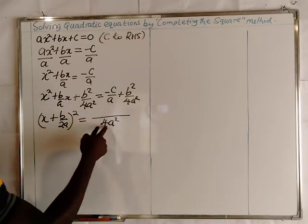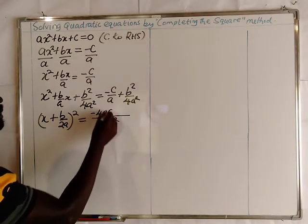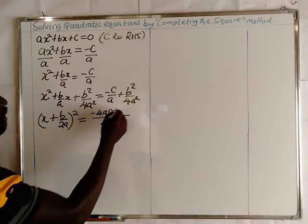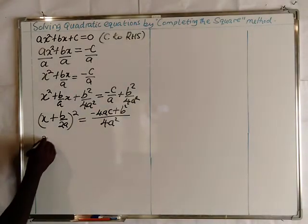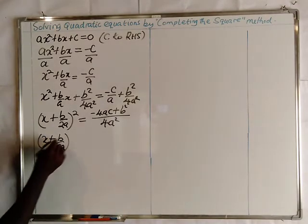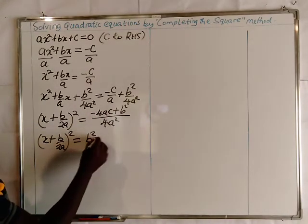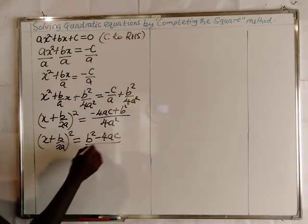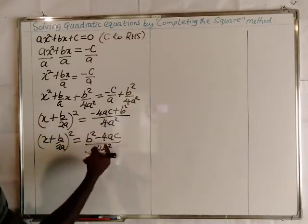On the right hand side, combining over the common denominator 4a squared, we get negative 4ac plus b squared in the numerator. So x plus b over 2a, all squared, equals b squared minus 4ac over 4a squared, since addition is commutative.